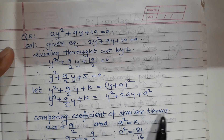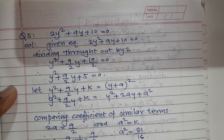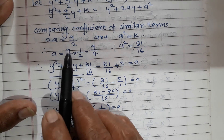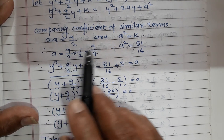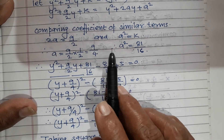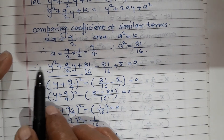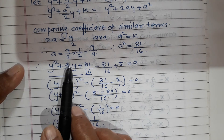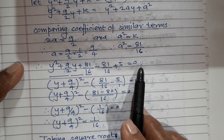Expanding and comparing coefficients: 2a equals 9/2, therefore a equals 9/4. And a² equals k, so k equals (9/4)² equals 81/16. Substituting this value in the equation: y² plus 9/2 y plus 81/16 minus 81/16 plus 5 equals 0.